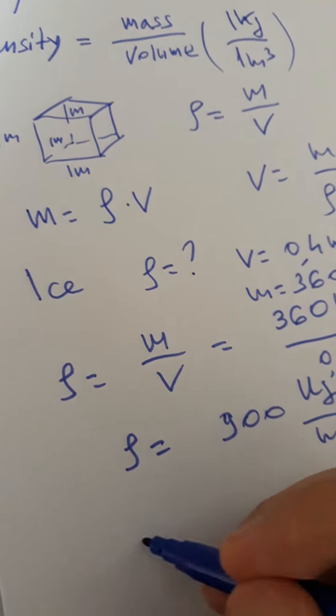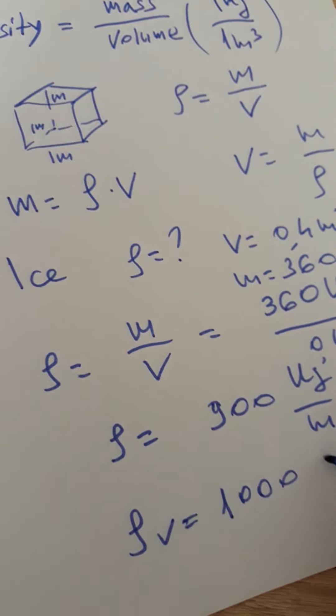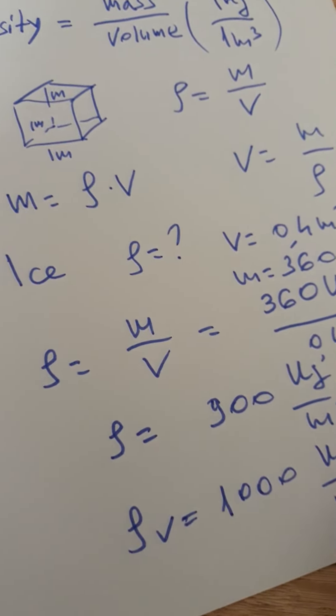And the density of water itself is 1000 kilos over meter cubic.